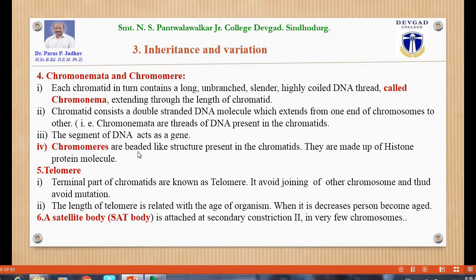Chromomeres are bead-like structures present in the chromatids, made up of histone protein molecules. The terminal parts of the chromatids are known as telomeres. Telomeres avoid joining of other chromosomes and thus help avoid mutation. The length of telomere is related to the age of the organism.